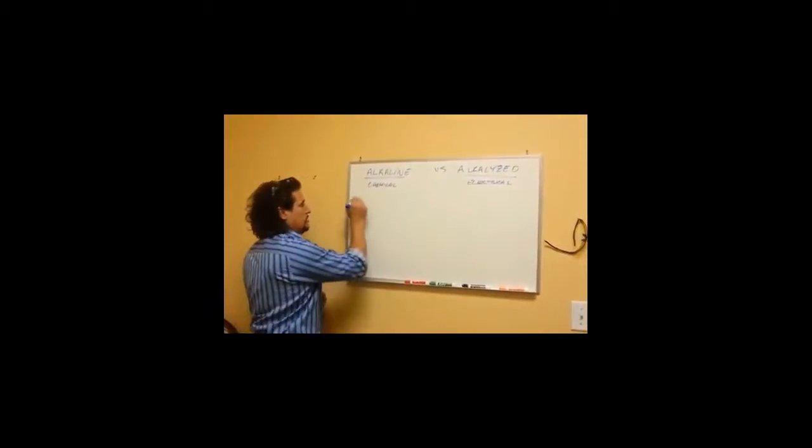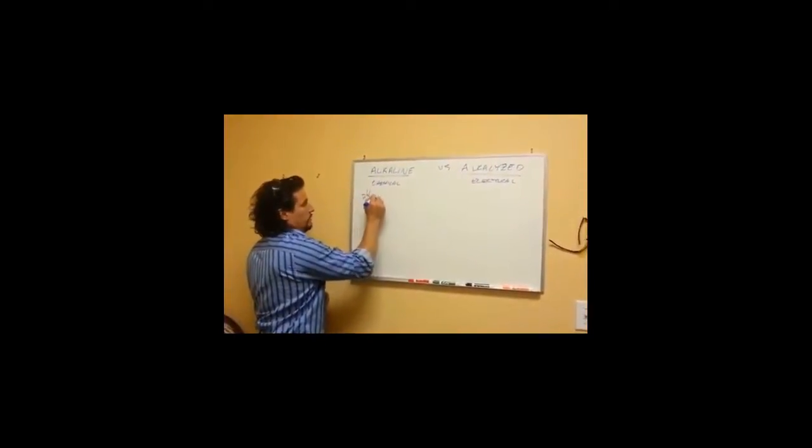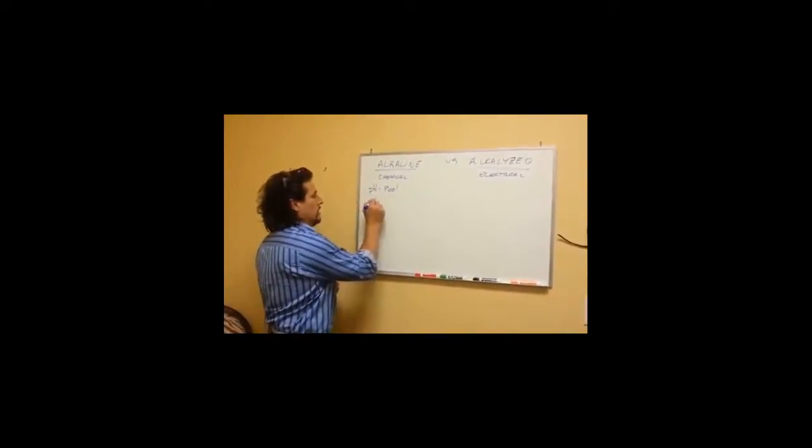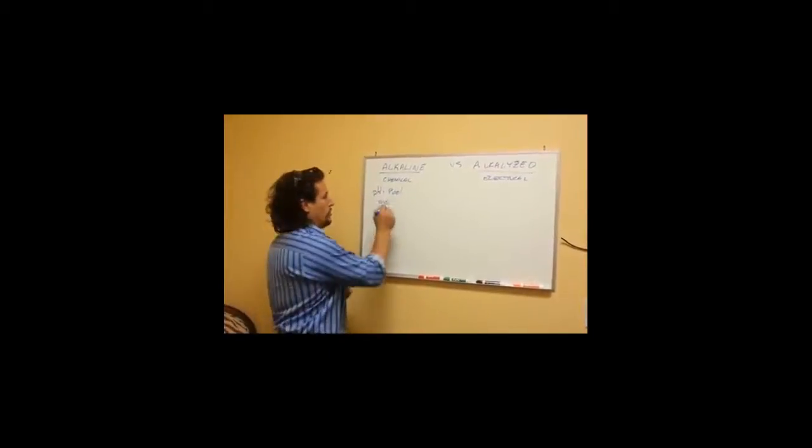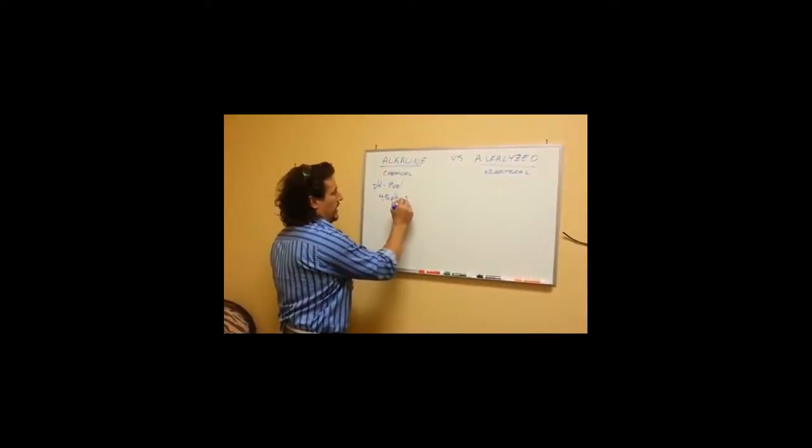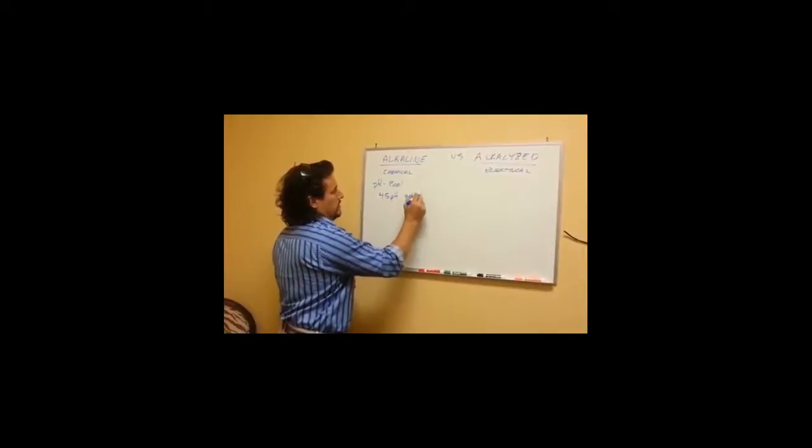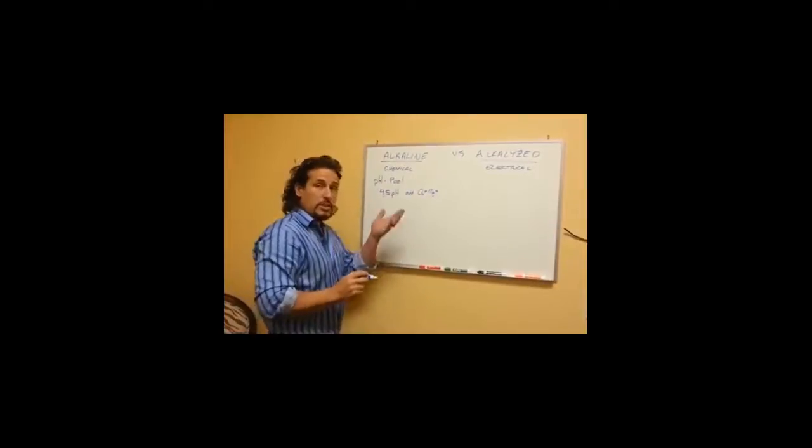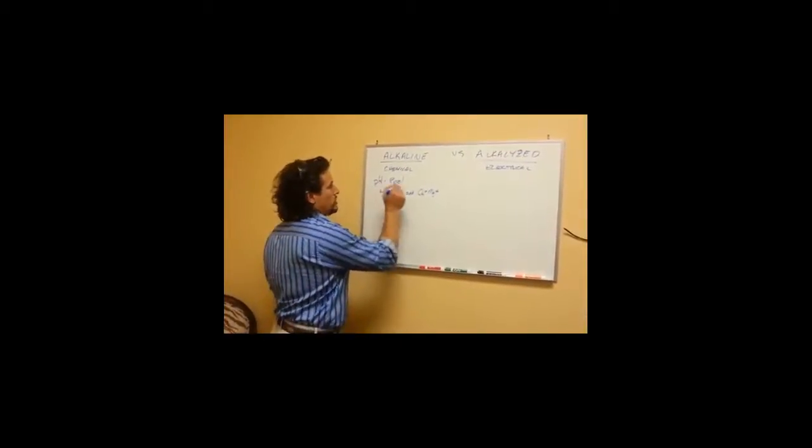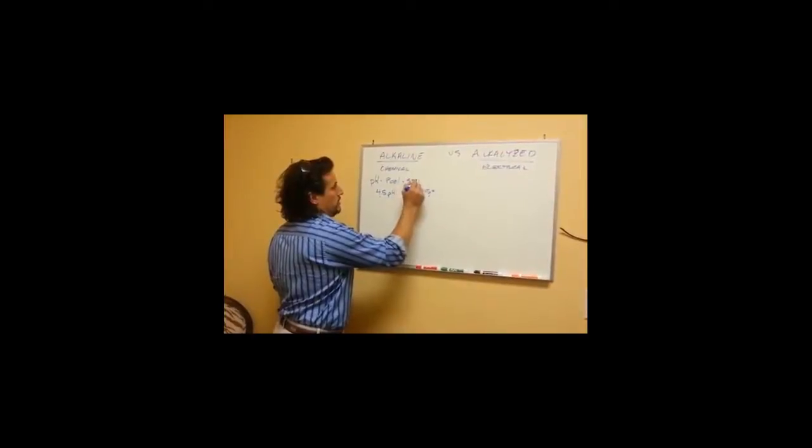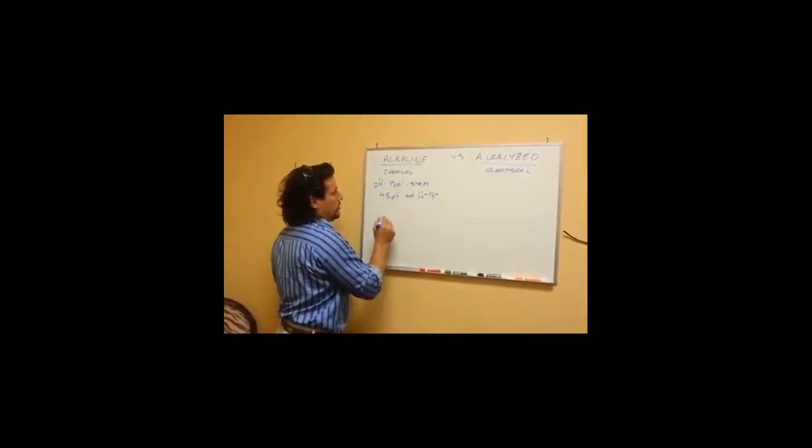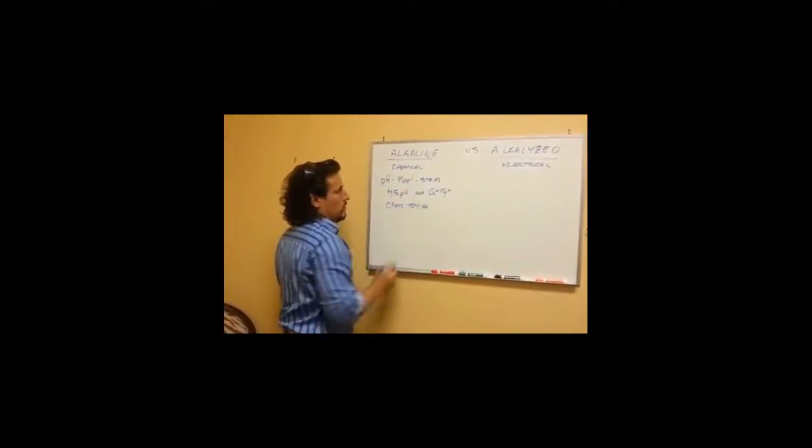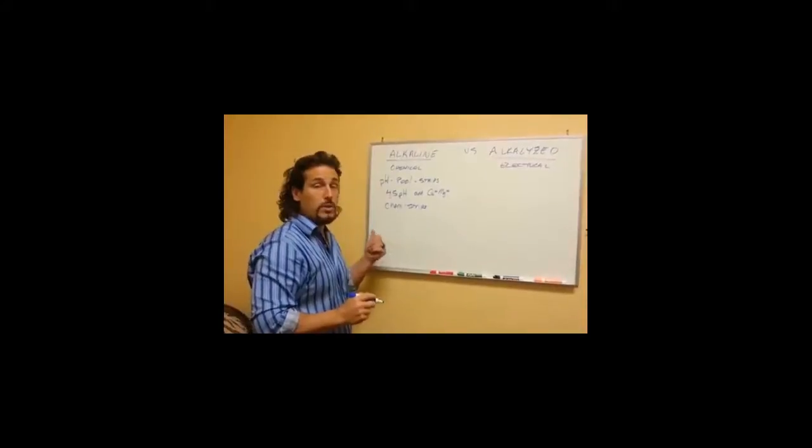If you were to use your pH strips, like for a pool, and they test the chemicals and the water comes out at say 4.5, well with a pH of 4.5 you would then add either calcium or magnesium or something like that to increase the alkalinity. What the pH strips are looking for is they are actually known as chem strips, which means they are looking for a chemical composition change.